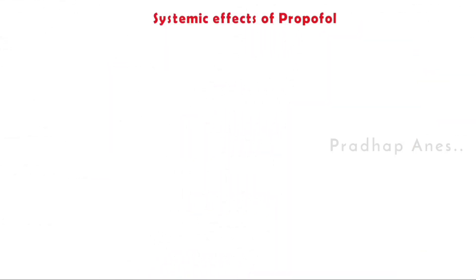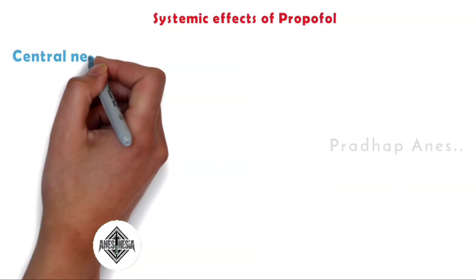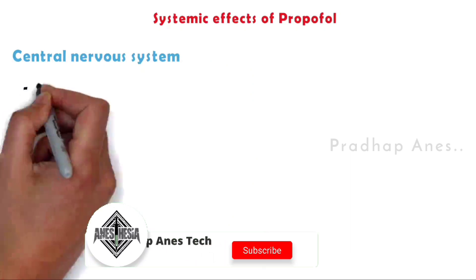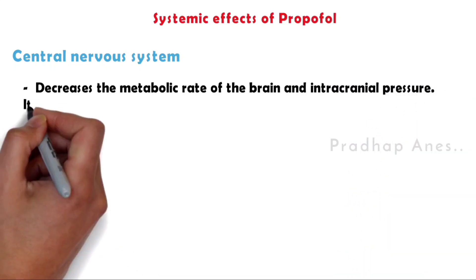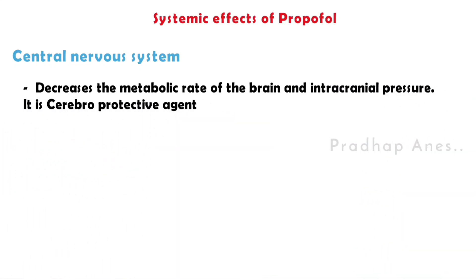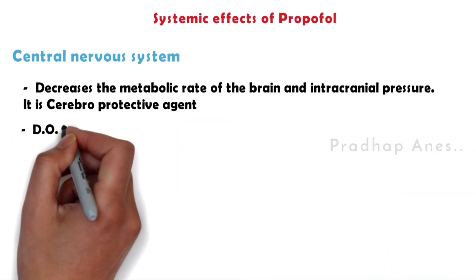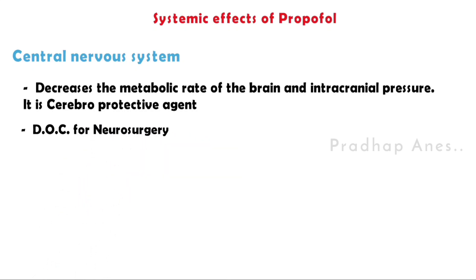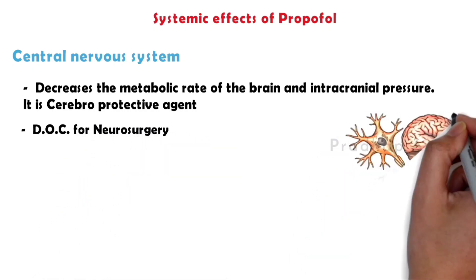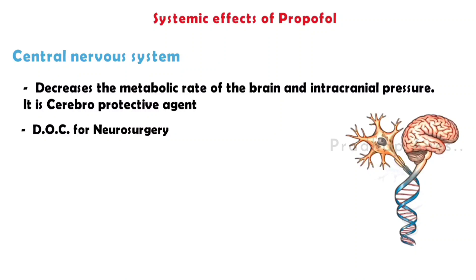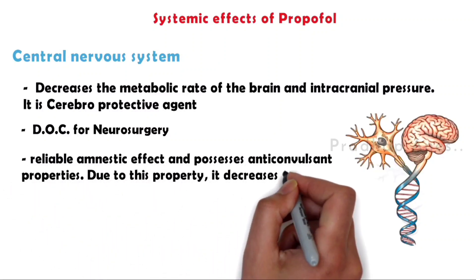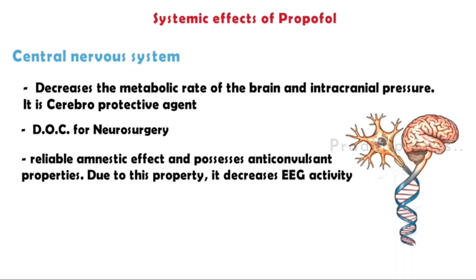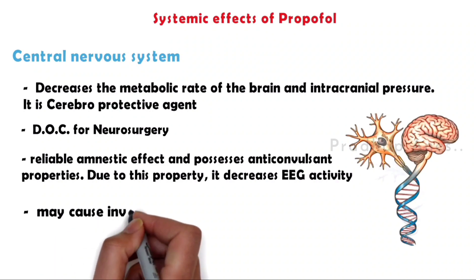Central nervous system effects: Like thiopentone, propofol decreases the metabolic rate of the brain and intracranial pressure. It is a cerebroprotective agent, making it the drug of choice for neurosurgery. It has a reliable amnestic effect and possesses anticonvulsant properties. Due to this property, it decreases EEG activity and may cause involuntary movements.